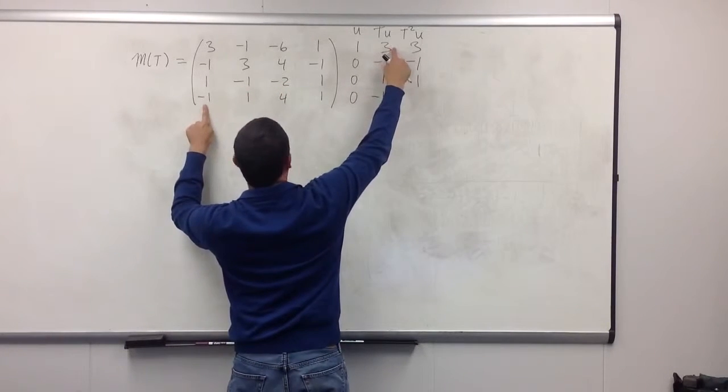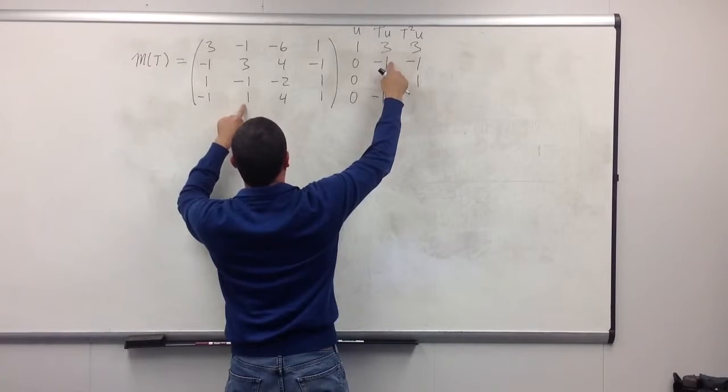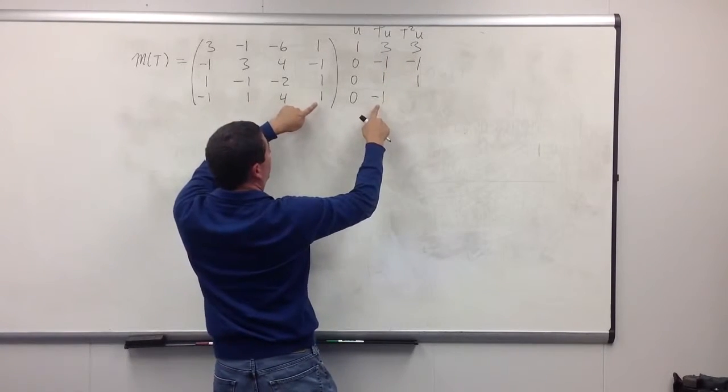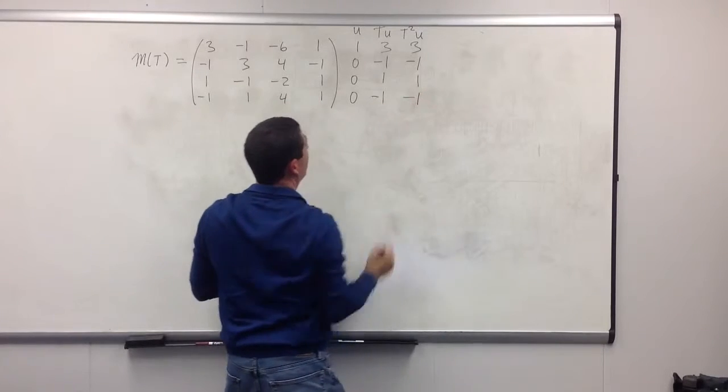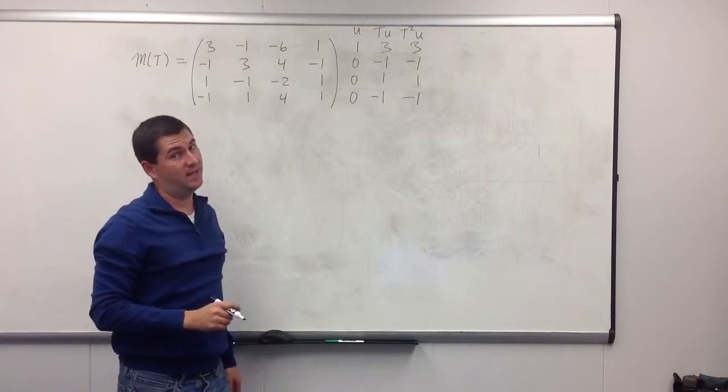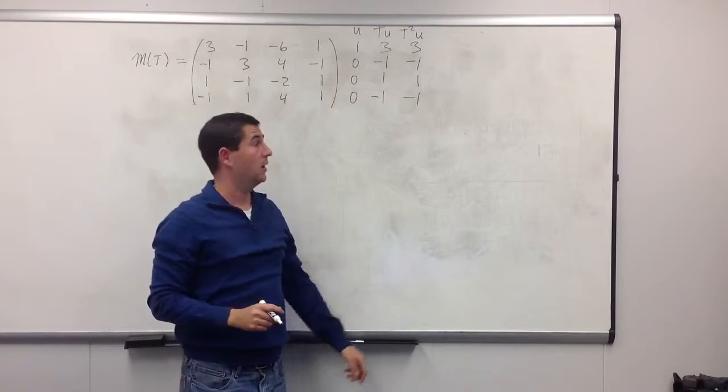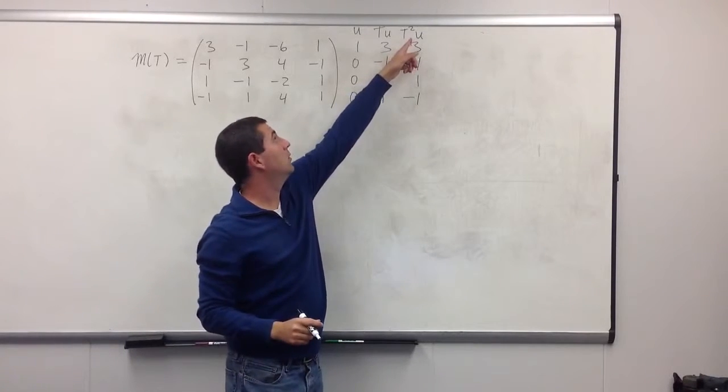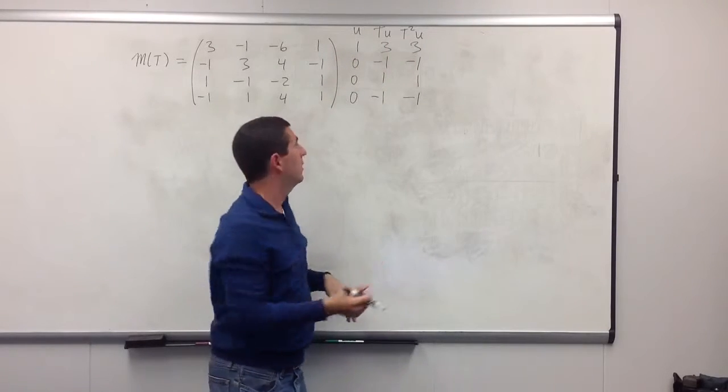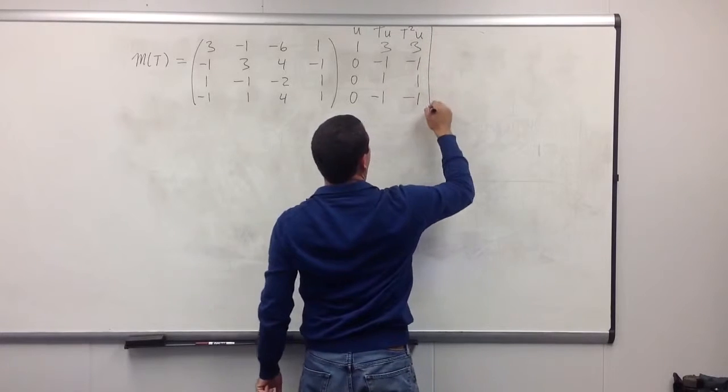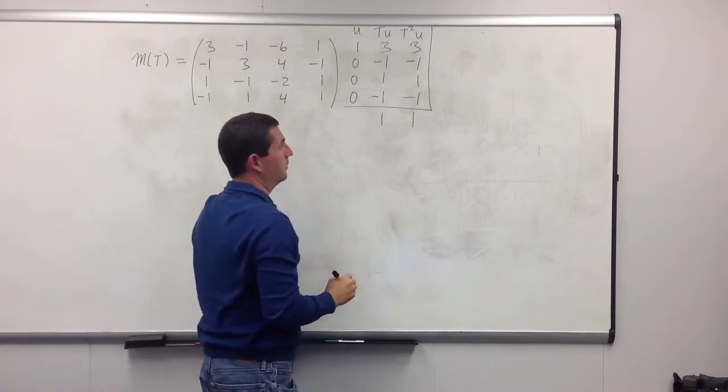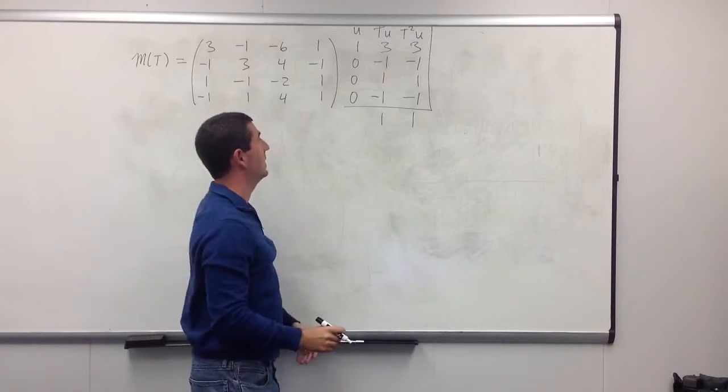Third one, we get 3, 4, 2, 1. And the final one, we get minus 3, minus 4, 0, and negative 1. This does not take so much work to see that T squared u is going to be a linear combination of u and Tu. It equals Tu. So, this is really easy. 1 T squared u equals 1 Tu. That was really nice.